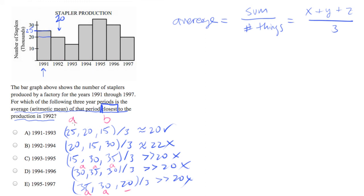Only in the case of A, when we have something above, something dead on, something below, does it even have the potential to average to what we want.